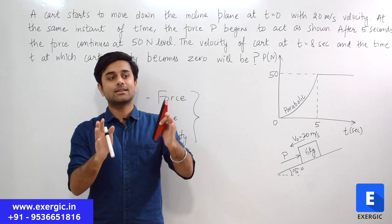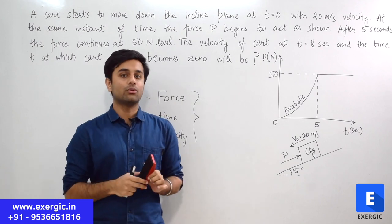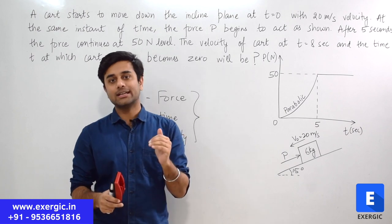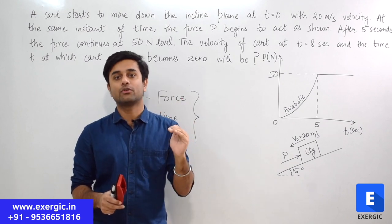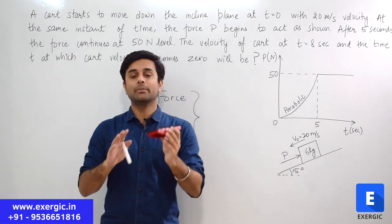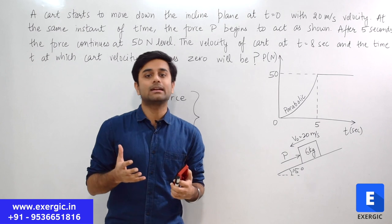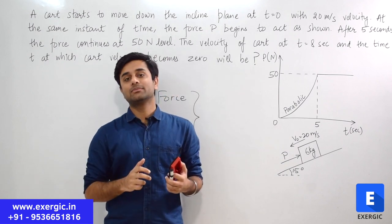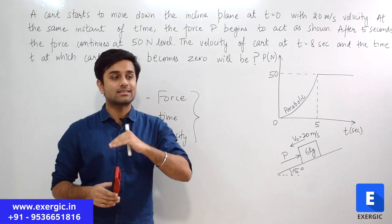Those who face trouble starting a question should use this approach initially until you become a master. Write them down and then think: with this given data, what expression should I apply? What is a suitable expression that includes force, time, and velocity? The answer is the impulse-momentum equation — impulse is force multiplied by time, and momentum includes velocity. Mass is also given, so using the impulse-momentum equation you can relate force with time and velocity. This is the expression or relation you should start with.